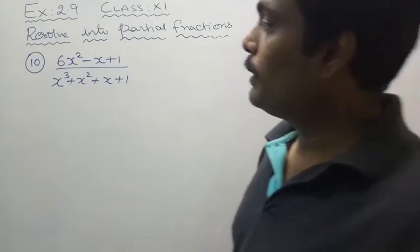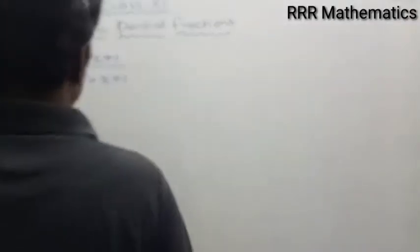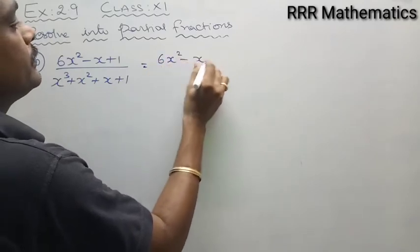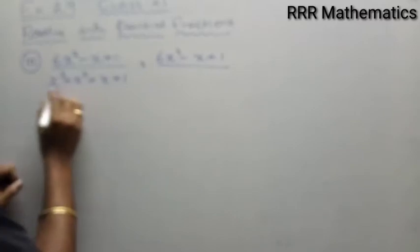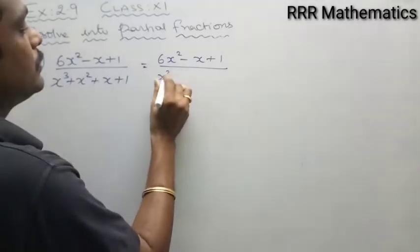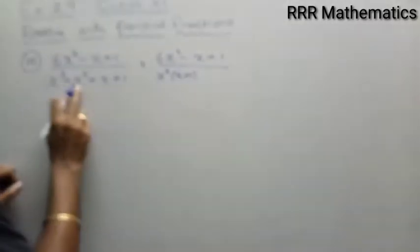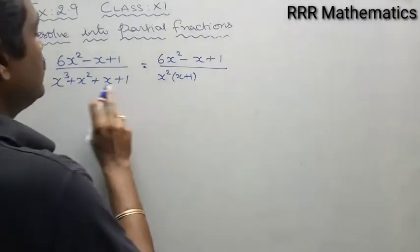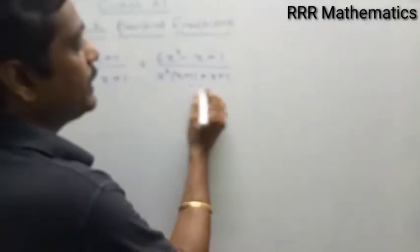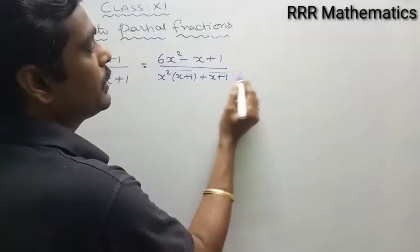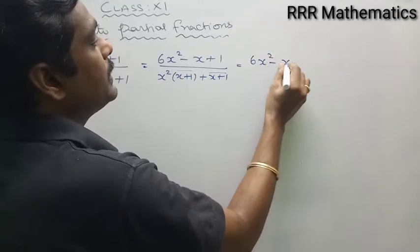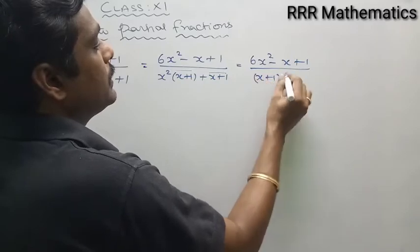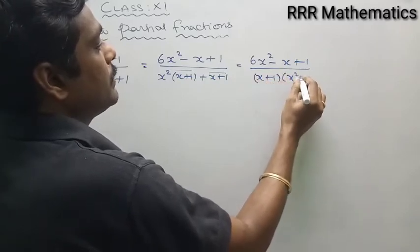In this case, the degree of the numerator is less than the degree of the denominator. I can factorize the denominator — I can take x² common between the first two terms, giving x²(x+1), and then taking (x+1) as common, it will be (x+1)(x²+1). So the expression becomes 6x²-x+1 divided by (x+1)(x²+1).